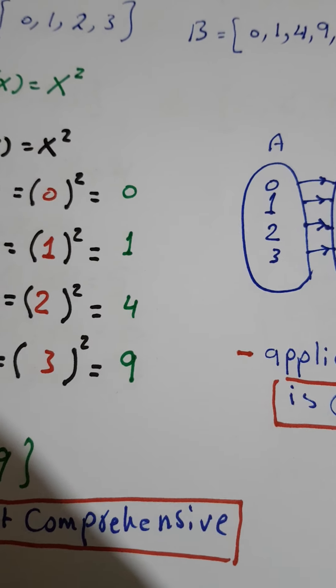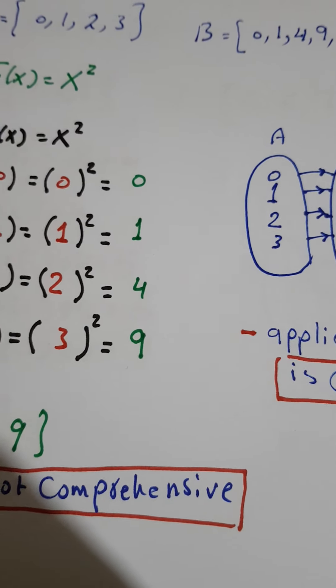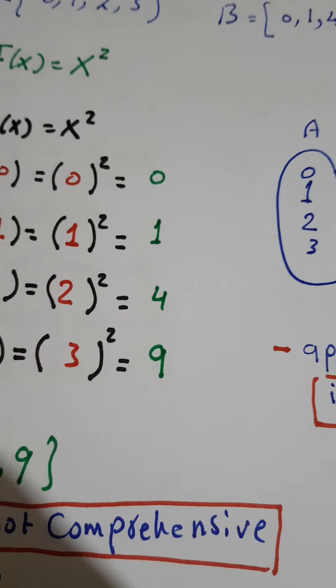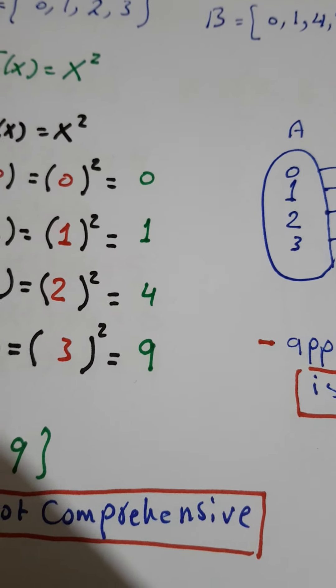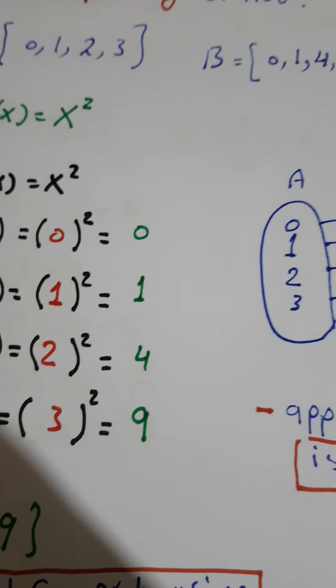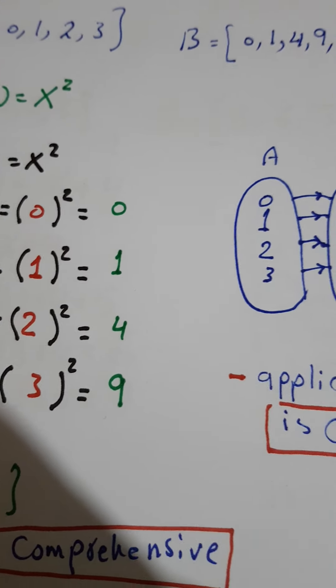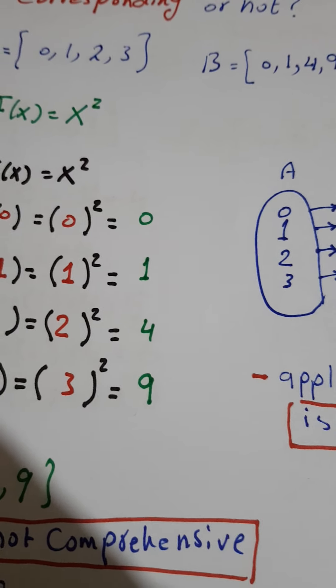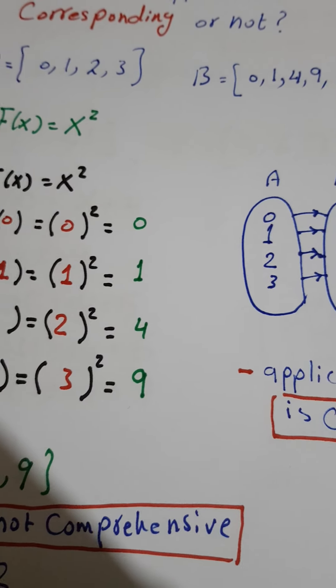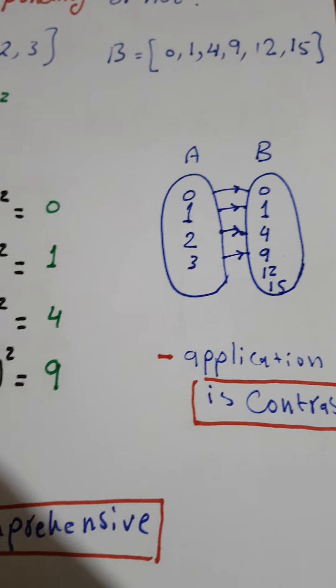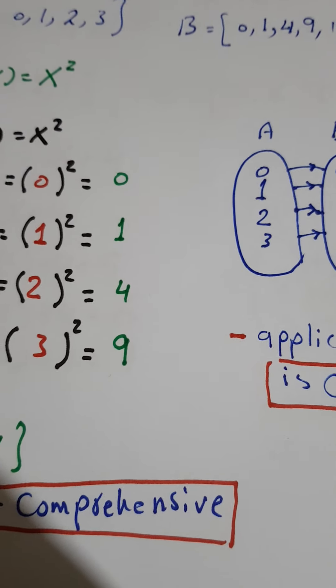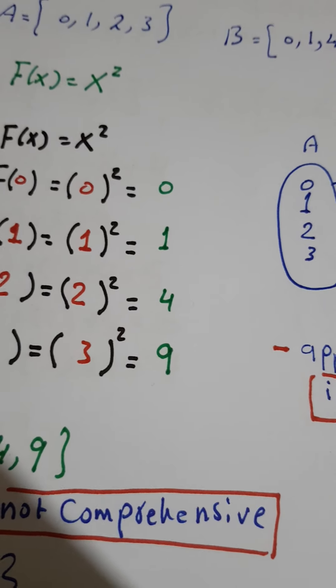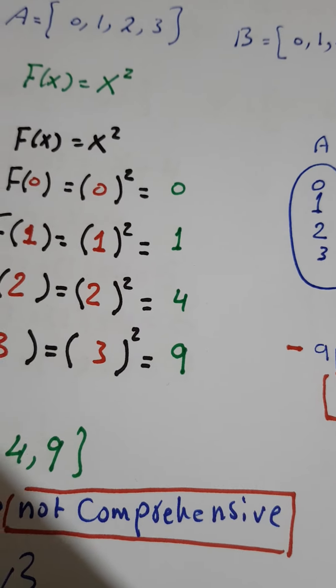Some pupils and students say it's not contrast. This is wrong because the application here is contrast, because each element in A has one only image in B. You look: 0 goes to 0, 1 goes to 1, 2 goes to 4, 3 goes to 9. Not two elements sharing one.